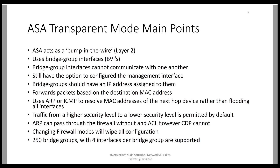Bridge group interfaces cannot communicate with one another. If you have bridge group one and bridge group two and they need to communicate, you need to send that traffic up to a layer 3 router for it to route back down into the separate bridge group. You still have the option to configure the management interface for a separate management connection. Bridge groups should have IP addresses assigned to them.